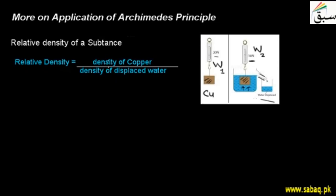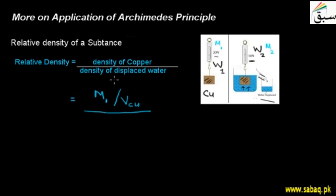Relative density is a ratio: density of copper divided by the density of displaced water. We have the density formula as mass per unit volume. That means mass of the copper in the air — if W1 is weight, it corresponds to mass M1. In the water, it corresponds to mass M2. So it is mass of copper in air divided by volume of copper, using the symbol for copper. The density of displaced water is similarly mass of water (H2O) divided by volume of water (H2O).